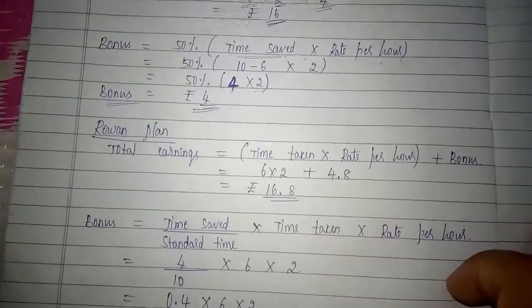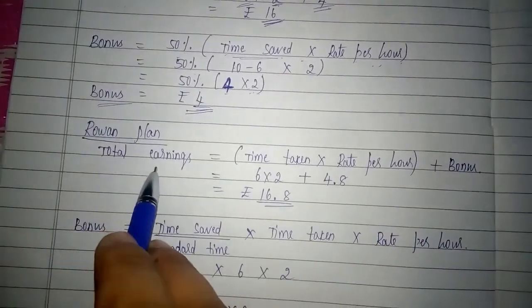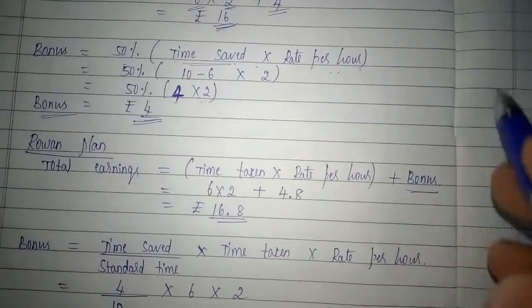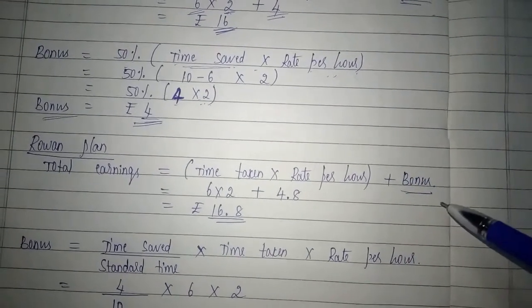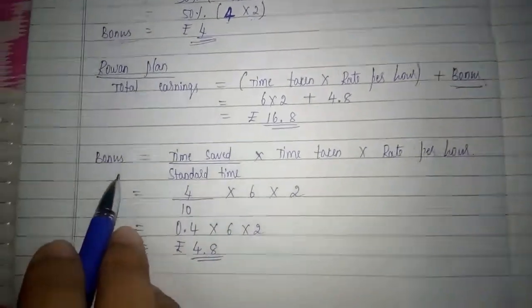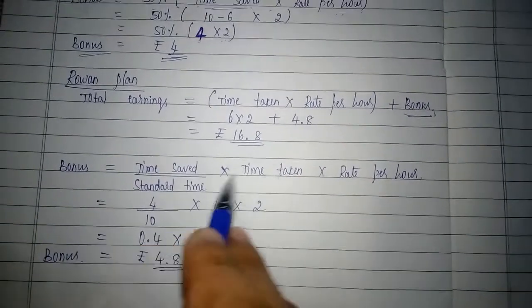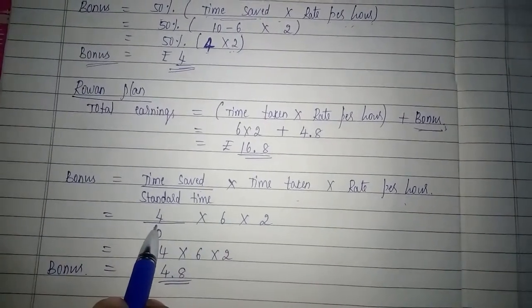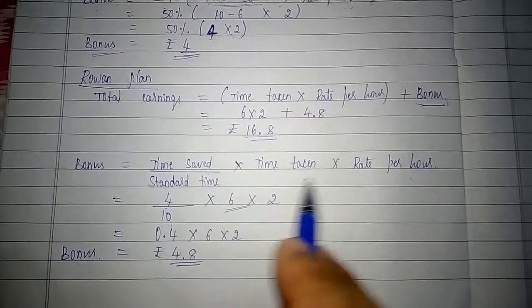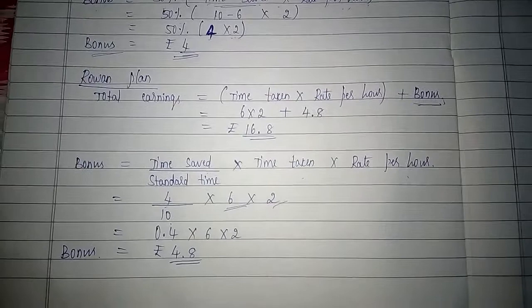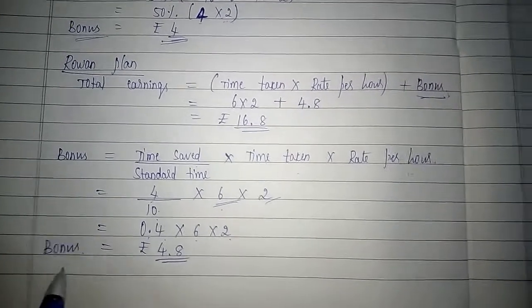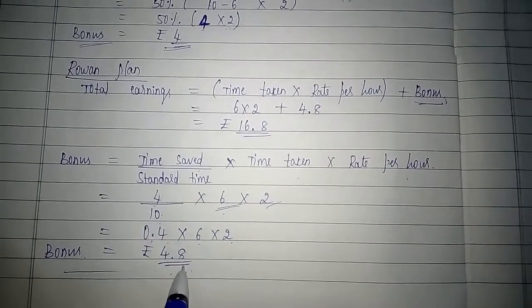In the same way, let us calculate total earnings of the worker under Rowan's plan. The formula is: time taken into rate per hour plus bonus. The calculation of bonus differs between Halsey and Rowan's plans. Under Rowan's plan, bonus is calculated as: time saved divided by standard time, multiplied by time taken, multiplied by rate per hour. Time saved is 4 hours, standard time is 10 hours, time taken is 6 hours, and rate per hour is Rs. 2. So, 4 divided by 10 equals 0.4, multiplied by 6 into 2, giving a bonus of Rs. 4.8 under Rowan's plan.